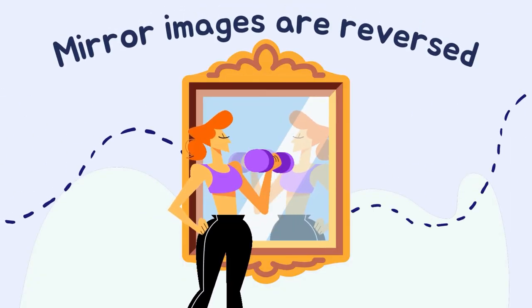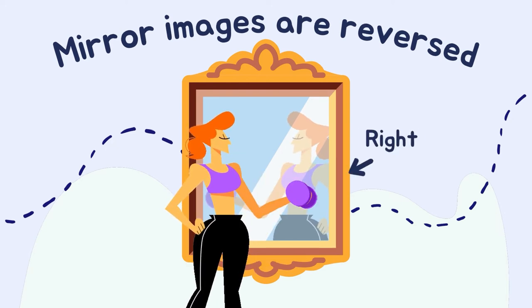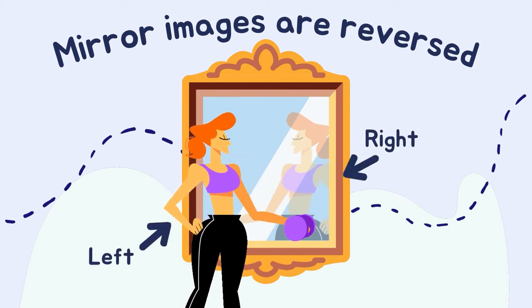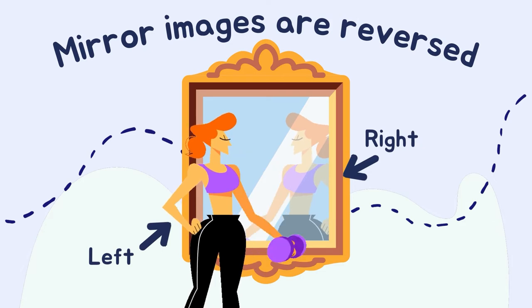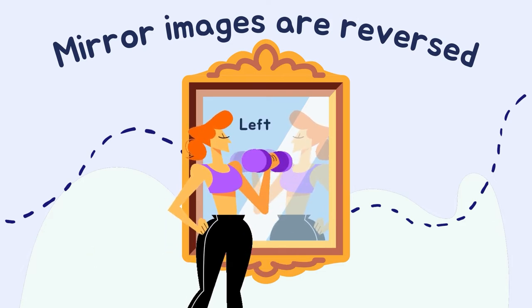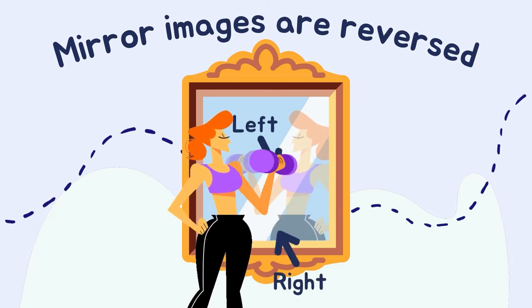Light also plays a very important role in how we see ourselves. As we all know, the images we see of ourselves in the mirrors are reversed. The thing that is actually on our right appears on our left in the mirror, and the thing on our left appears on the right in the mirror.